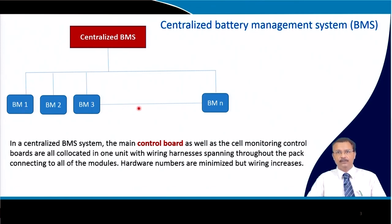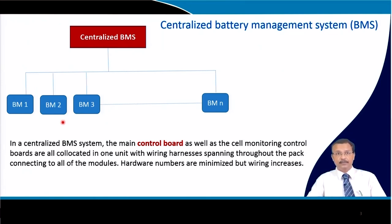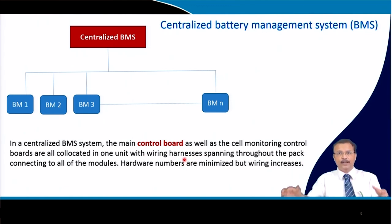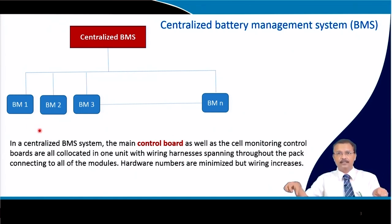This is only one unit and it controls all the battery modules. You can have n number of battery modules, and in each battery module there are cells connected in series and parallel combination. Everything is controlled by this centralized BMS system, so there will be a lot of wiring — each module is connected to this centralized board. You will have to manage the wiring throughout the whole battery pack; it is a jungle of wires.